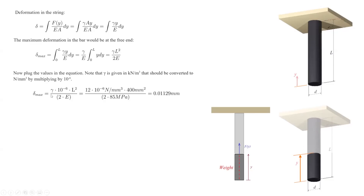Now let me plug in the values, making sure units are consistent. I'm going to convert everything to millimeters and megapascals. The only parameter to convert is gamma, given in kilonewtons per cubic meter, which needs to be converted to newtons per cubic millimeter — multiply by 1000 and divide by 10 to the ninth, simplifying to 10 to the negative 6. Plugging in these values gives us the magnitude of deformation in this element.